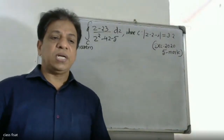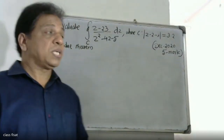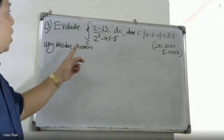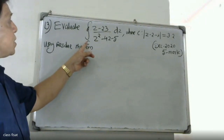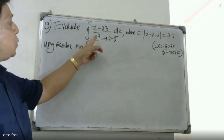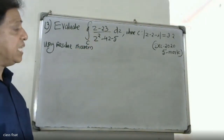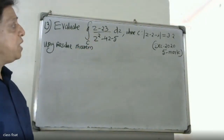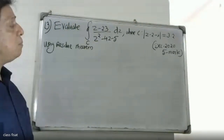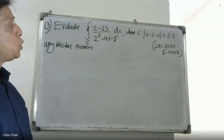Good morning friends. We are going to evaluate the integral of (z - 23) / (z² - 4z + 5) dz, where C is a circuit with |z - 2| equal to 3.5.